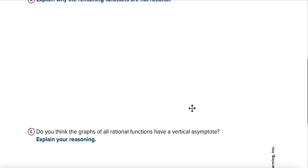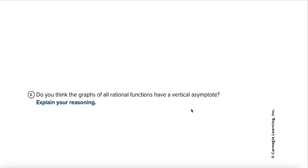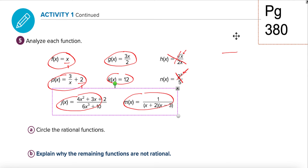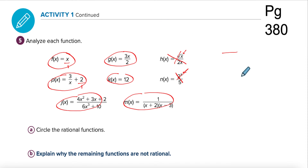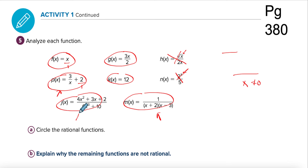Do you think the graphs of all rational functions will have a vertical asymptote? A vertical asymptote is created any time we divide by a variable that cannot equal zero — that creates this situation. So a lot of these are going to have vertical asymptotes. However, if there's a rational function with no variable in the denominator, it's not going to have a vertical asymptote. So any time there's a variable in the bottom, there's a possibility of a vertical asymptote.